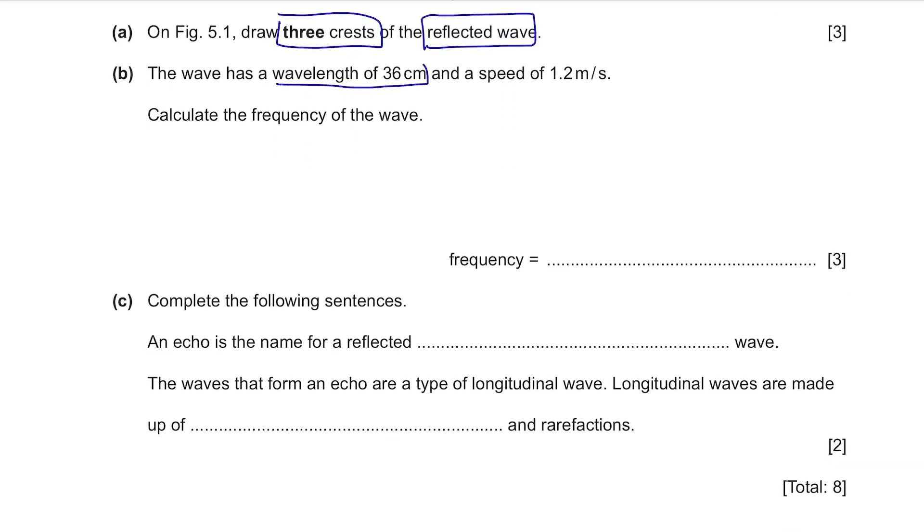Part B. The wave has a wavelength of 36 cm and a speed of 1.2 m per second. Calculate the frequency of the wave. The formula related to this question is speed equals to frequency times wavelength. So to find the frequency, it's speed divided by wavelength. Be careful of the units. Speed is in m per second, it's correct, it's in SI unit. But wavelength is in centimeters. It needs to be in meters as the SI unit of length is meters. So 36 divided by 100 to convert it to meters, it's 0.36 meters. Now we can use this formula. 1.2 divided by 0.36, 3.3 Hz. Always pay attention to units in physics.